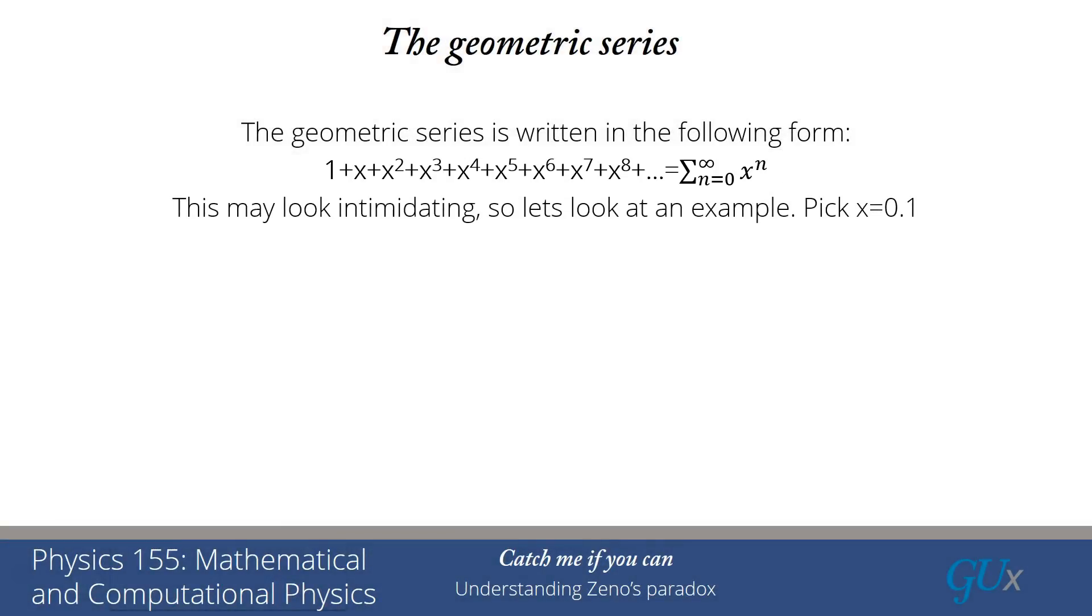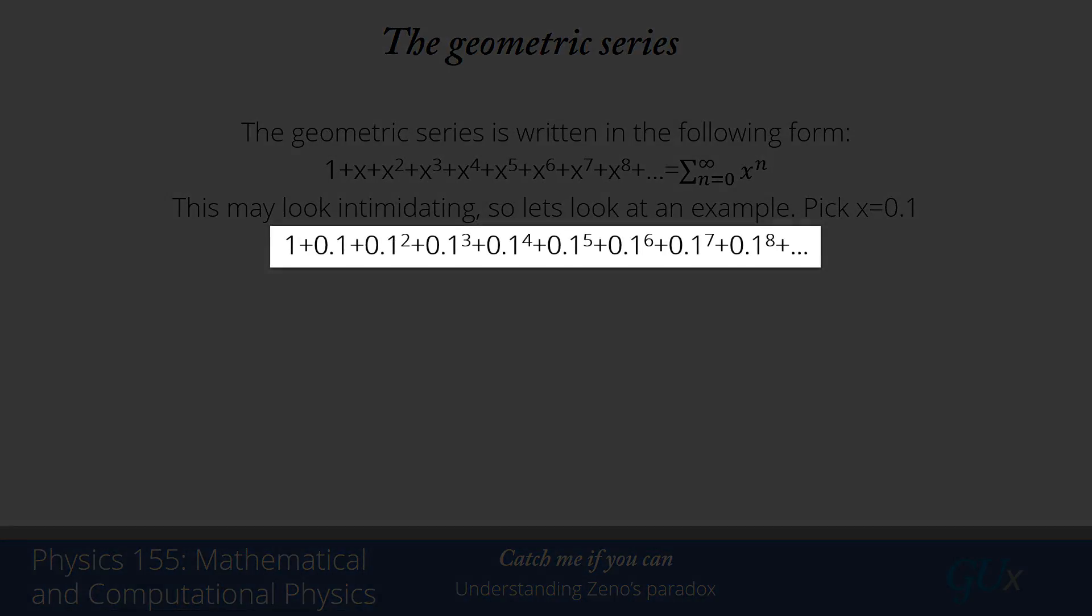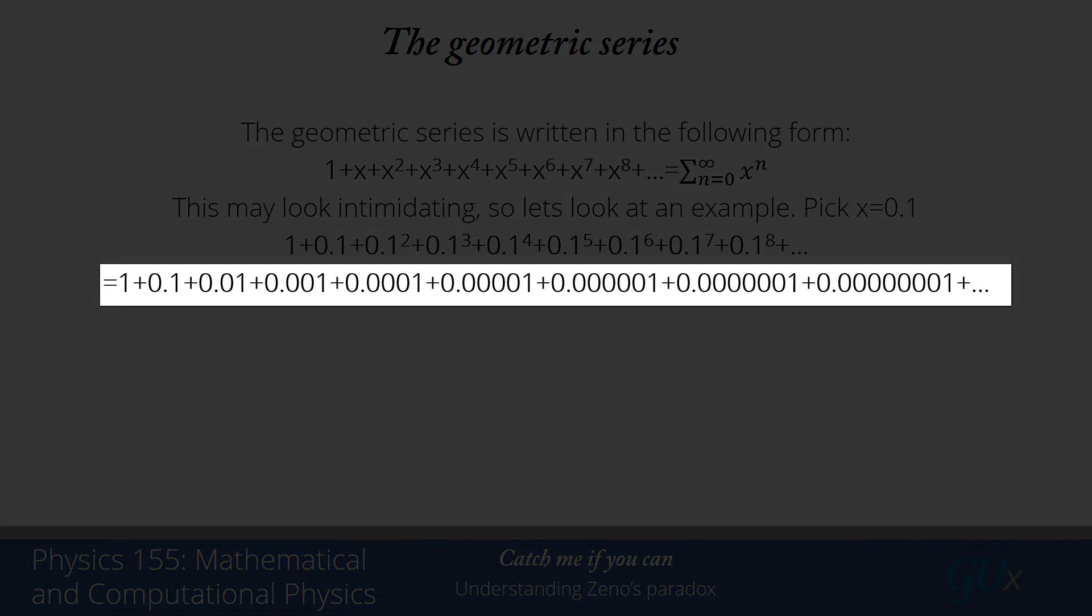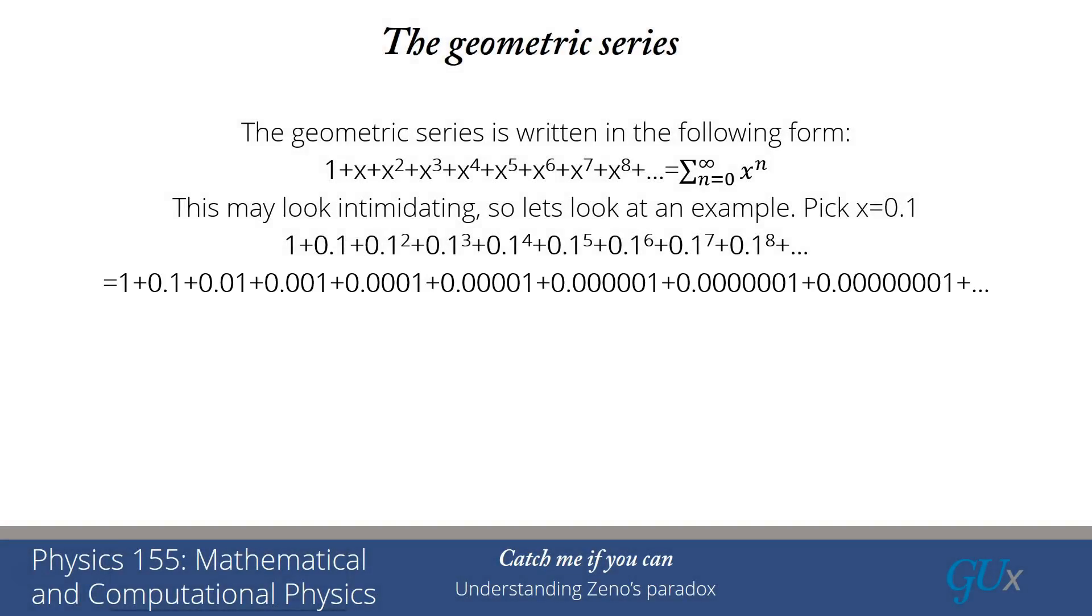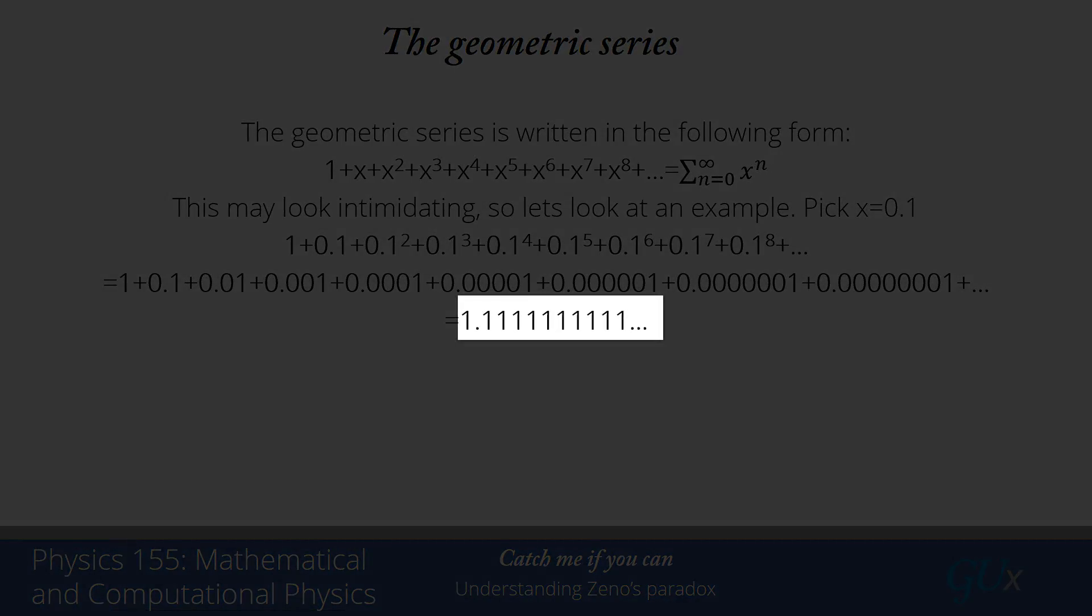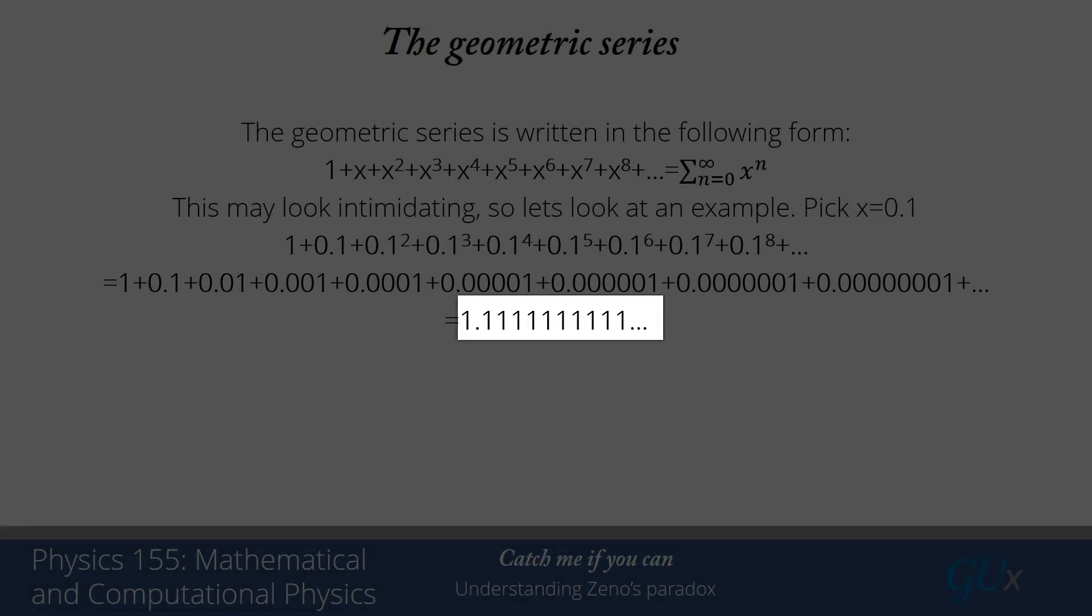This of course looks quite intimidating. So let's look at a concrete example. Let's pick x equals 0.1. Then what we have is 1 plus 0.1 plus 0.1 squared plus 0.1 cubed and so on. We can evaluate each of those terms. It's 1 plus 0.1 plus 0.01 plus 0.001 and so on. And I can very easily, just by looking at that, sum the whole thing.